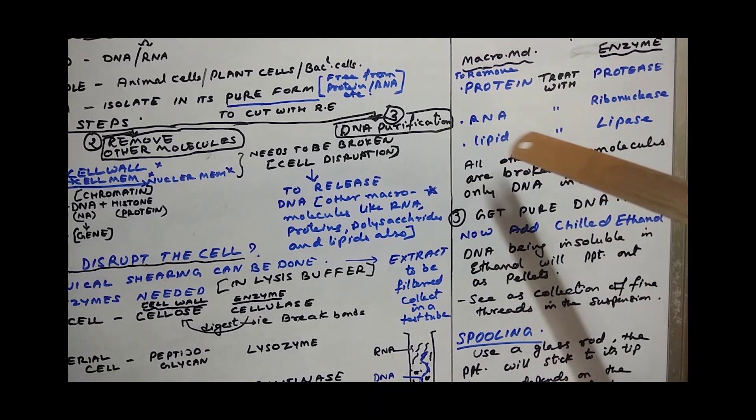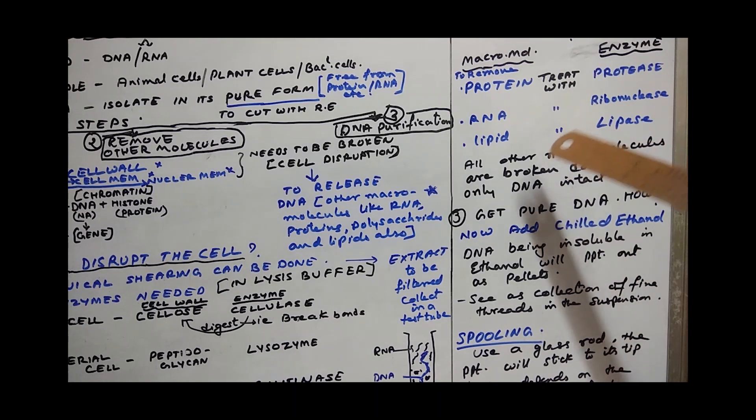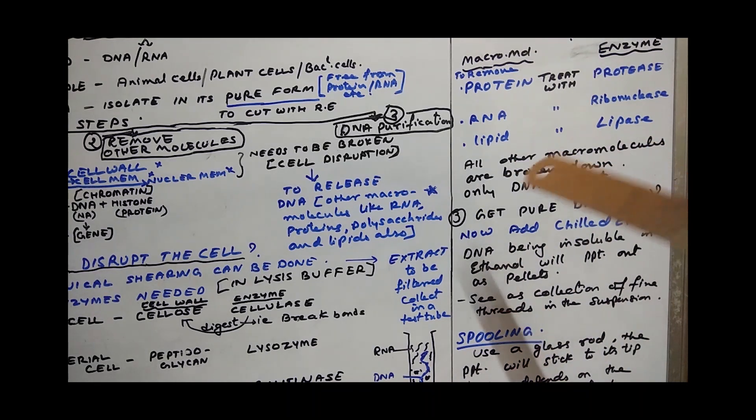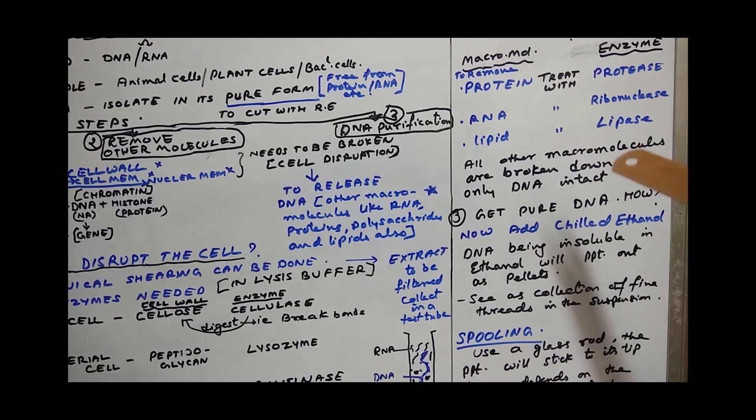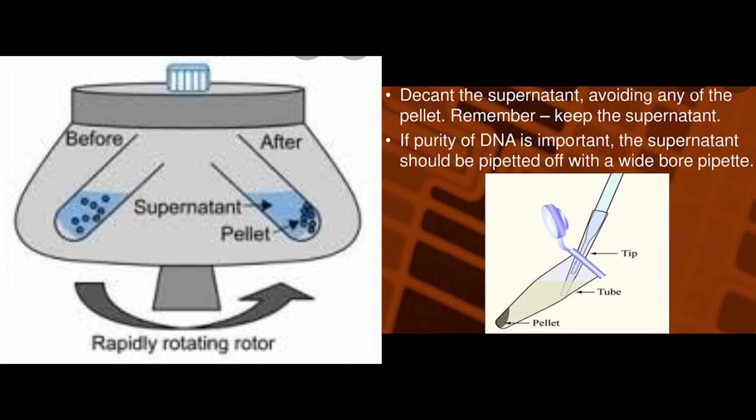To remove RNA, you treat it with ribonuclease enzyme. Lipids can be treated with lipase. If there are polysaccharides, carbohydrates can be treated with amylase. All other macromolecules should be broken down. Only DNA remains intact because you are not using enzyme digesting the DNA. Now centrifuge this sample.